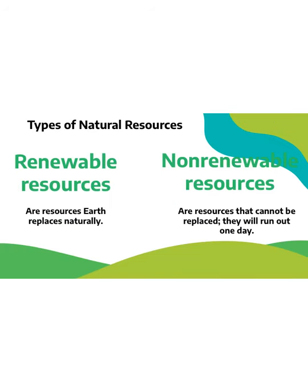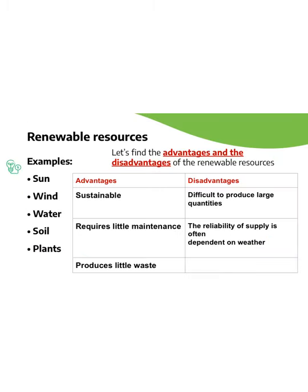Basically, we have two types of natural resources: renewable resources and non-renewable resources. The difference between them is that renewable resources are replaced naturally by the Earth, while non-renewable resources can't be replaced — they will run out one day. Examples of renewable resources include the sun, wind, water, soil, and plants.